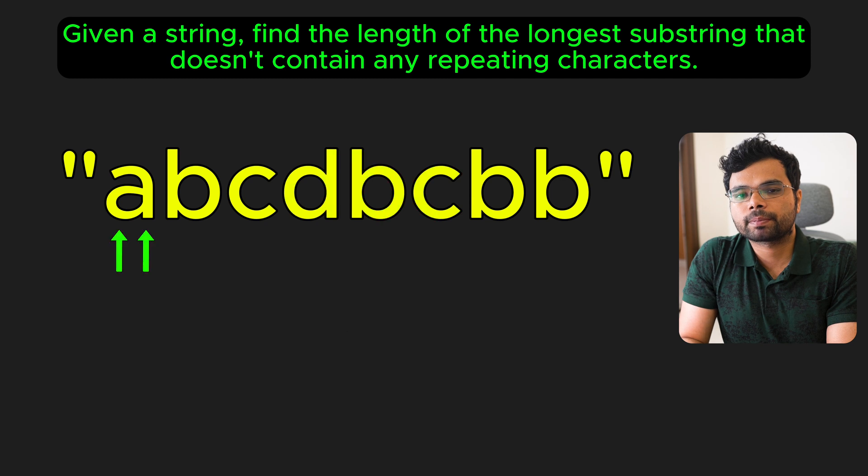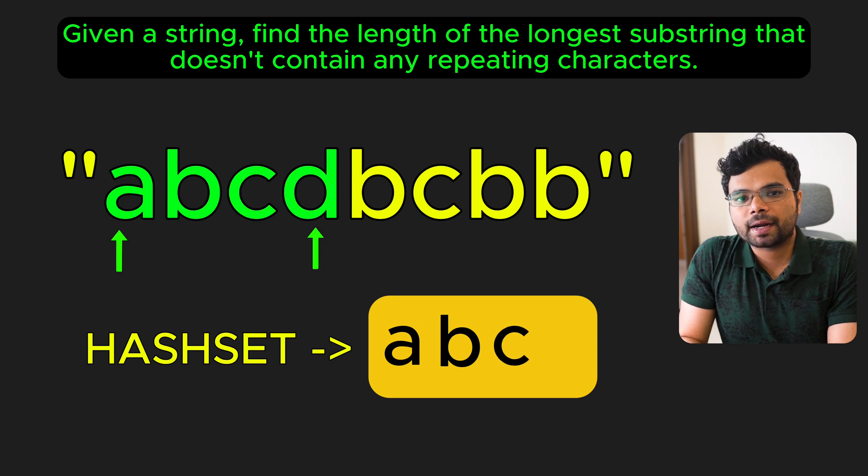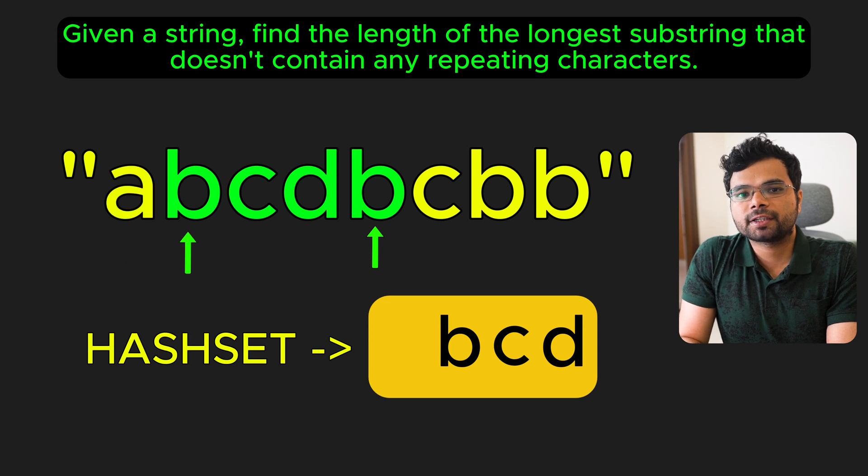Here is how it works step by step. Initialize two pointers left and right to represent the boundaries of the current substring, both starting at index 0. Use a hash set to store the characters in the current window for quick lookups of duplicates. Expand the window by moving the right pointer and adding the current character to the hash set. If the current character is already in the hash set, which indicates a duplicate, shrink the window by moving the left pointer forward. Remove characters from the hash set until the duplicate is removed. This ensures that the substring remains valid, containing only unique characters.